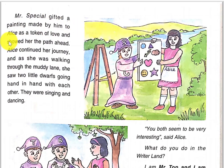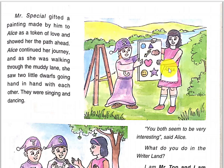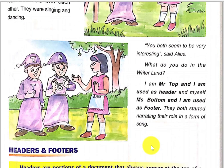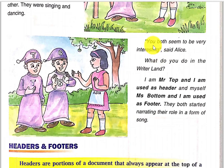Mr. Special gifted a painting made by him to Alice as a token of love and showed her the path ahead. He gifted a beautiful painting to Alice and Alice continued her journey. As she was walking through the muddy lane, she saw two little dwarfs going hand in hand. They were singing and dancing. Alice said, 'You both seem to be very interesting. What do you do in the writer land?' These are two other dwarfs.